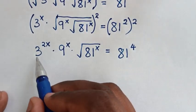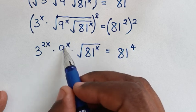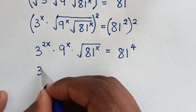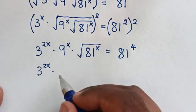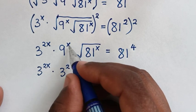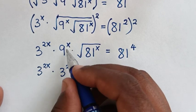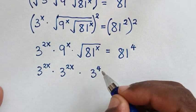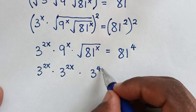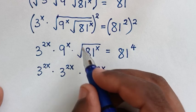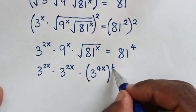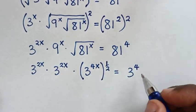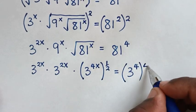In the next step, we have a base of 3. We convert all terms to base 3: 9 is 3 squared, so 9 to the power of x becomes 3 to the power of 2x. And 81 is 3 to the power of 4, so 81 to the power of x becomes 3 to the power of 4x. The square root here is the same as a bracket to the power of one half. On the right side, 81 is 3 to the power of 4, so that bracket gives power of 4.